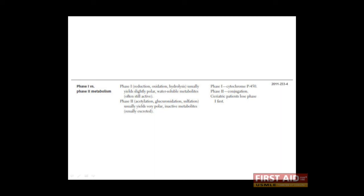Now that we understand that more polarized and charged substances are more easily excreted by the kidney, let's take a look at how the liver modifies drugs to make them more polar and thus more readily cleared. In the liver, there are two main types of metabolism. Phase 1 is carried out by the large enzyme family known as the cytochrome P450s. Phase 2 metabolism is carried out by another set of enzymes and mainly results in the conjugation of different functional groups to a drug. Phase 2 reactions typically result in the acetylation, glucuronidation, and sulfation of drugs. These are all relatively large and very polar functional groups, which also render the drug inactive. These modified drugs can be excreted by the kidneys.